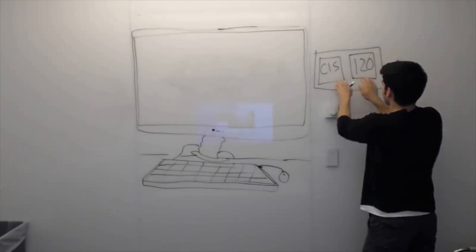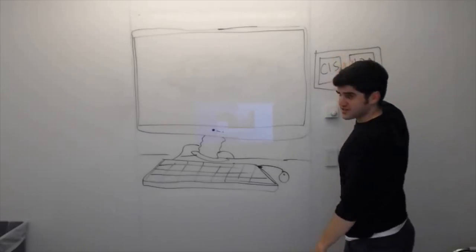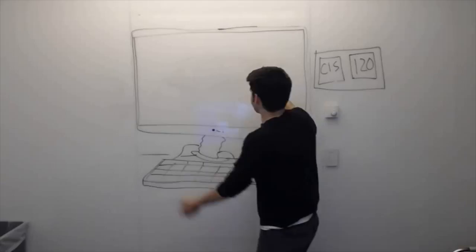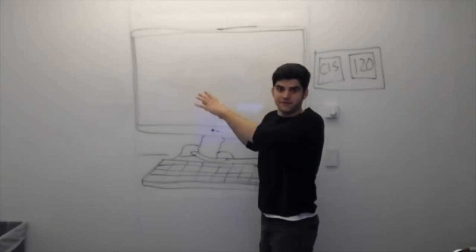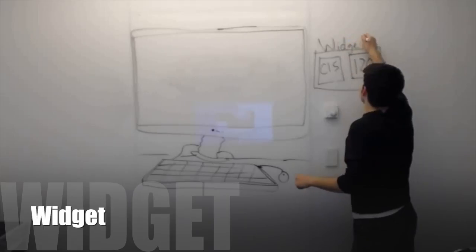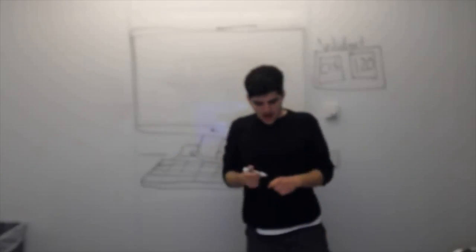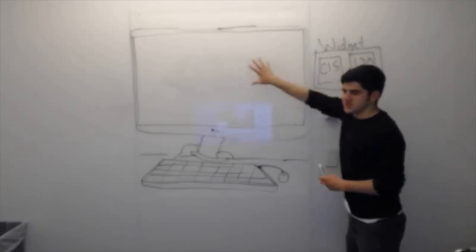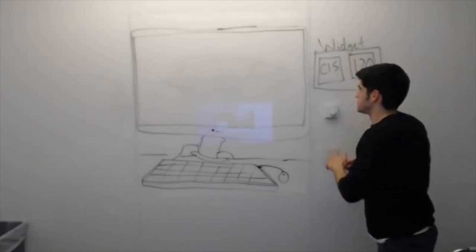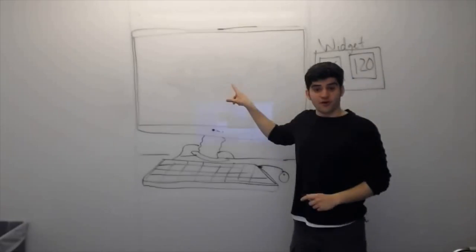that right now my goal is to put this graphical element on the screen. This is just a box with two boxes inside of it that say SIS and 120. What is this? This is really just a graphical element that takes up a region in my graphics area. So this is just called a widget.